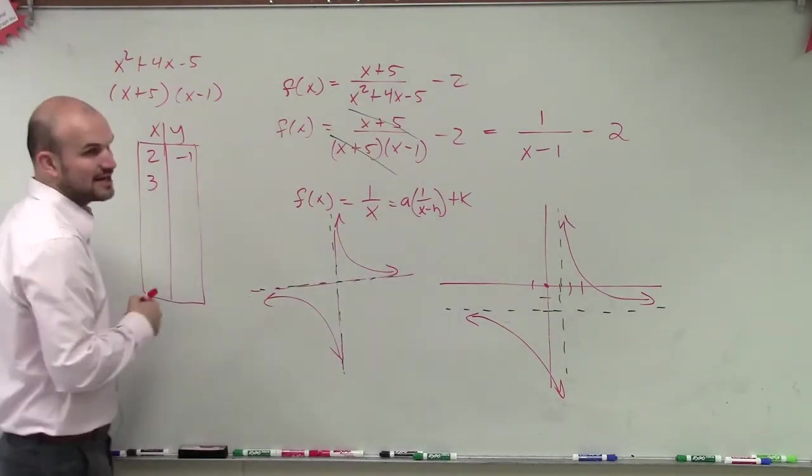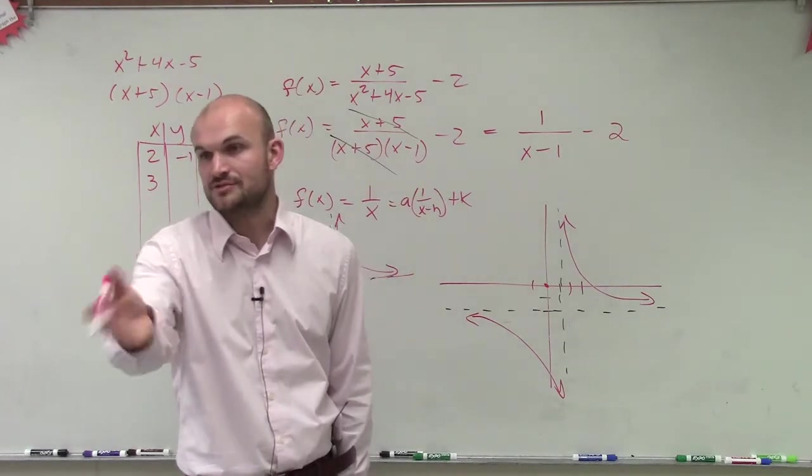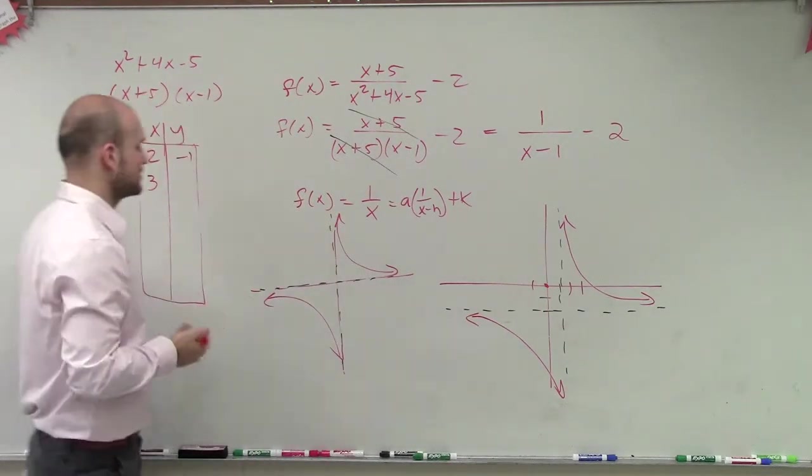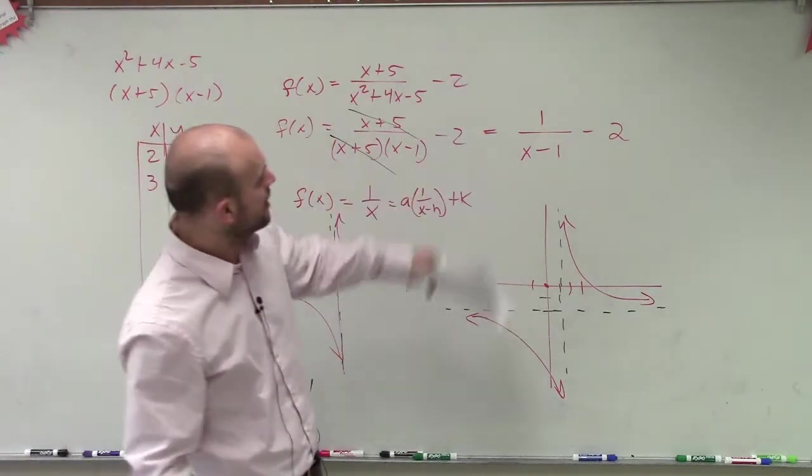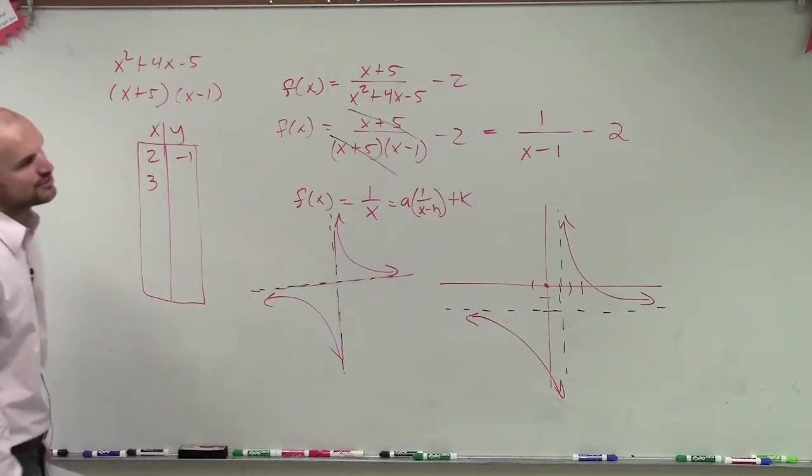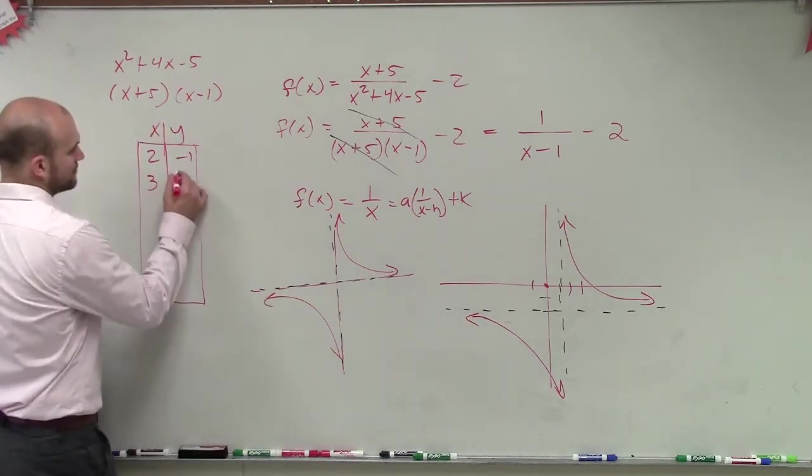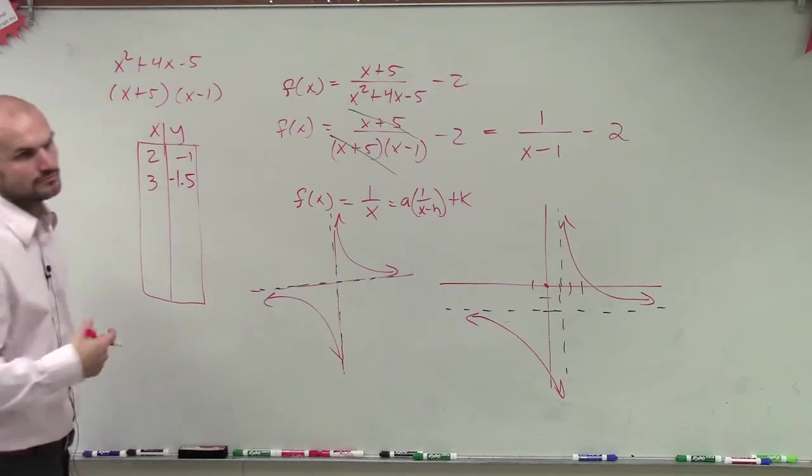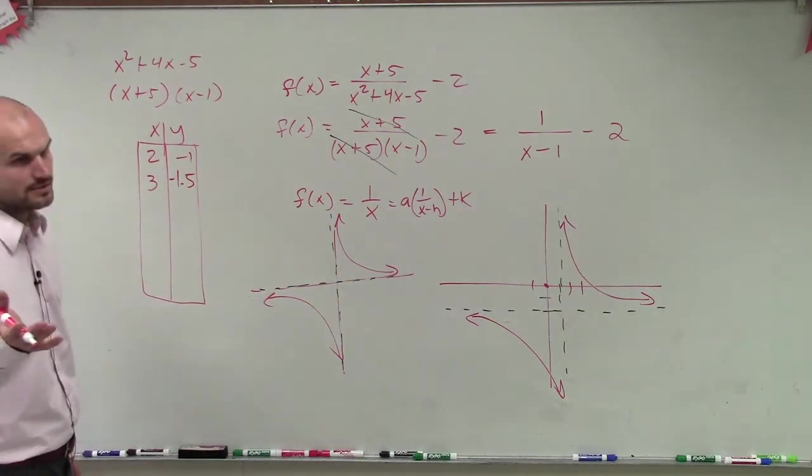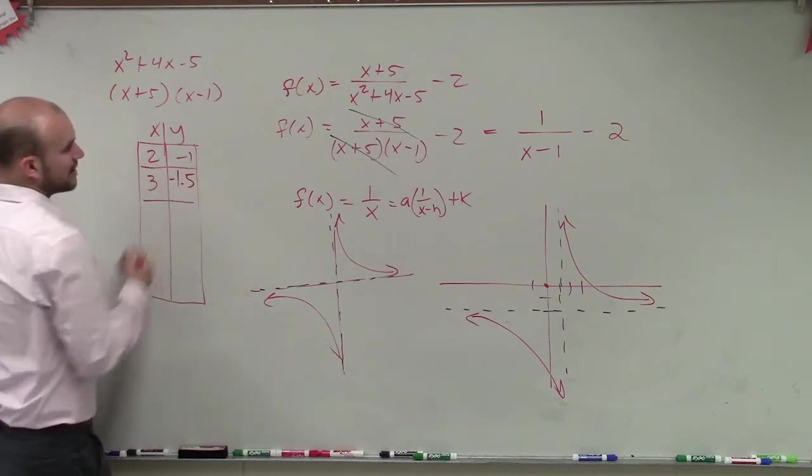Remember, I asked you guys to always complete a table of values to provide at least two points to the right of the asymptote and two points to the left of the vertical asymptote. So at 3 would be 3 minus 1 is 2, so 1 divided by 2 is 1 half. So 1 half minus 2 would be negative 1.5.